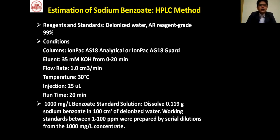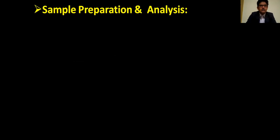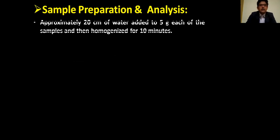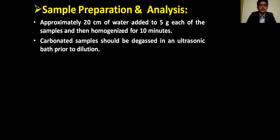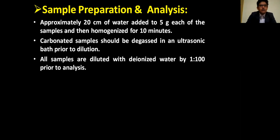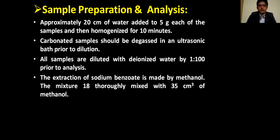For sample preparation and analysis, approximately 20 cm³ of water is added to 5 grams of sample and homogenized for 10 minutes. Carbonated samples should be degassed in an ultrasonic bath prior to dilution. All samples are diluted with deionized water at a 1 to 100 ratio prior to analysis.